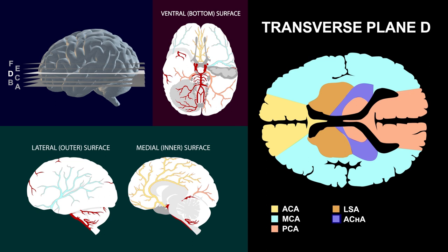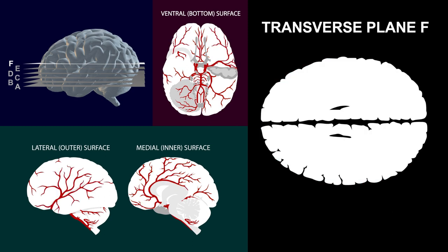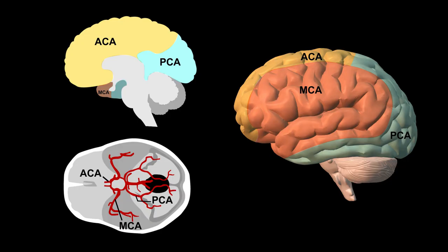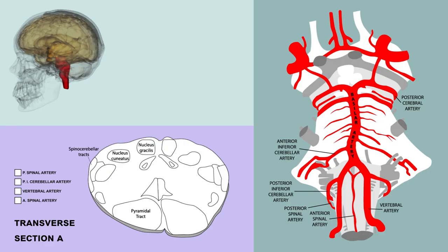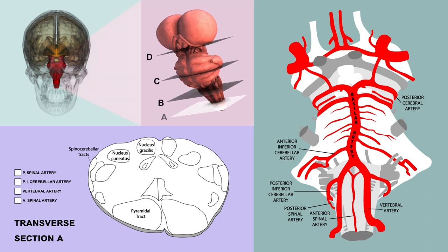In the next two sections, we can follow the same blood supply regions. Note, however, that in the final section we only see areas supplied by the anterior, middle, and posterior cerebral arteries, as the lenticulostriate and anterior choroidal arteries supply subcortical structures. Here's a diagram to summarize the cortical vascular territories. Now let's look at the brainstem's blood supply, examining sections starting from the caudal medulla.